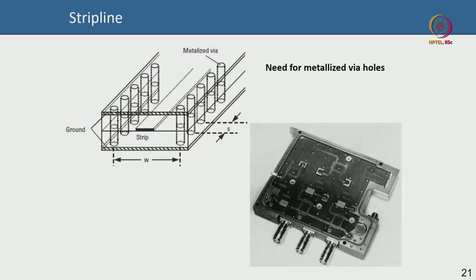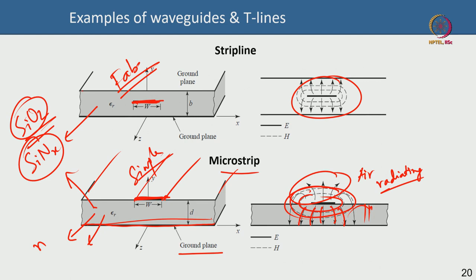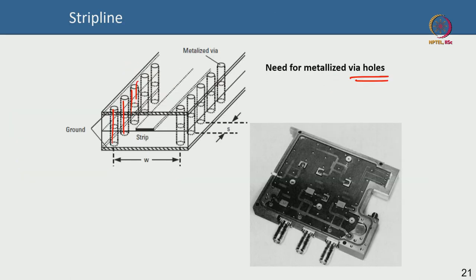In strip line you need via holes to connect the top and bottom ground planes together, reducing ground inductance and ensuring they are the same ground, with the strip line running in between. The entire electromagnetic wave is confined within the dielectric in strip line, unlike microstrip. Fabricating strip line is a bit more complicated than microstrip, but both are transmission lines realized in semiconductor fabrication to propagate the RF signal.